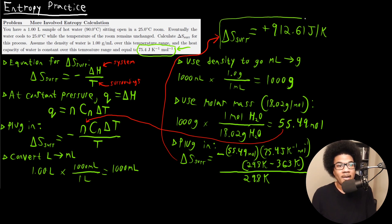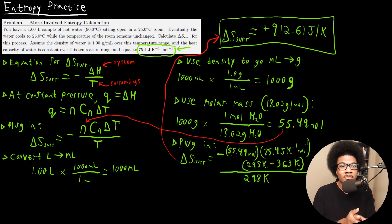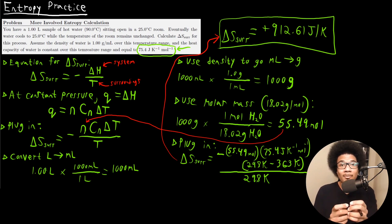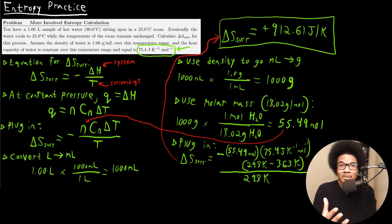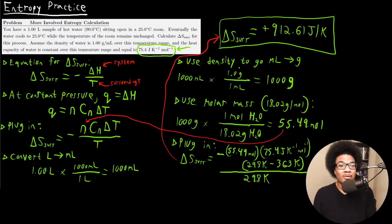We get an increase in delta S of the surroundings, which makes sense. The hot water releases heat to the surroundings, increasing the thermal energy of the surroundings, which increases the activity and disorder of the molecules. So the transfer of thermal energy from system to surroundings results in an increase in entropy for the surroundings.